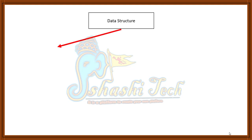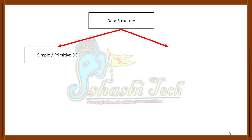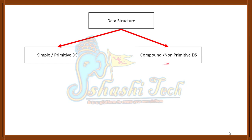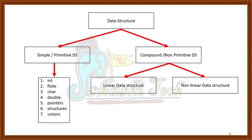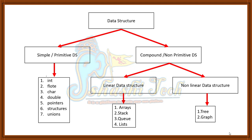Data structure is classified into primitive data structure and non-primitive data structure. Non-primitive data structure is again classified into two types: linear data structure and non-linear data structure. Examples of primitive data structure are int, float, character, double, pointer, structures, and unions. Examples of linear data structure are arrays, stack, queues, and list. Examples of non-linear data structure are trees and graphs.